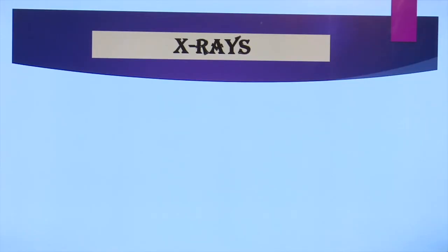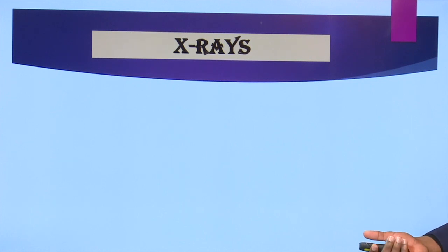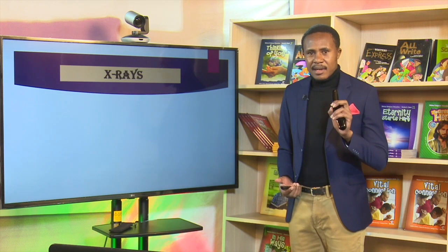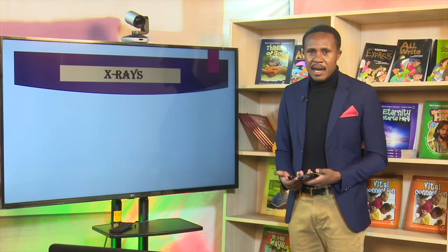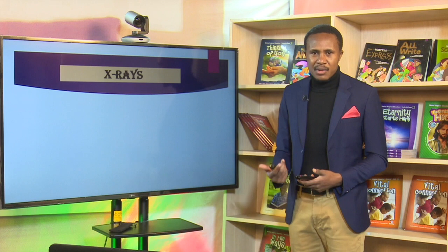Our first topic for today's learning is X-rays. To remind you, X-rays are produced in X-ray tubes when fast-moving electrons are suddenly stopped by a metal target. When the electrons are stopped, the kinetic energy possessed by the stream of electrons is converted to heat energy — around 99.5% — with around 0.5% of the energy being converted into X-rays.